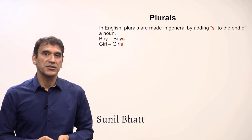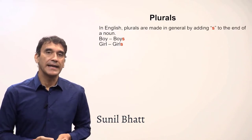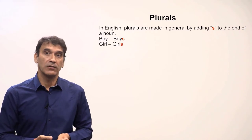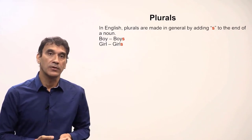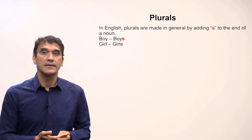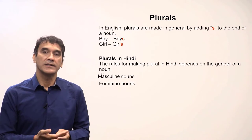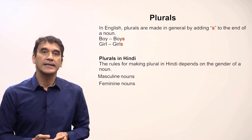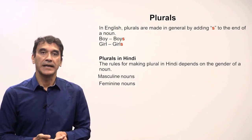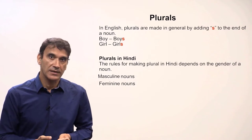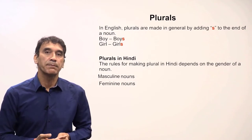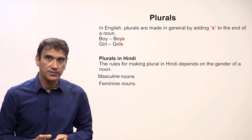Our next grammar point is plurals. In English, the plural is made mainly by adding 's' to the nouns — for example, 'boy' singular, 'boys' plural; 'girl' singular, 'girls' plural. Hindi, on the other hand, makes plurals based on gender. As you know, in Hindi every noun belongs to either a masculine or a feminine gender, and the rules for making plural depend on the gender of the noun.